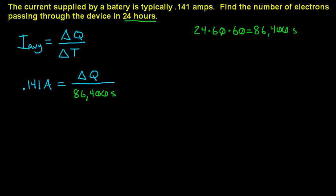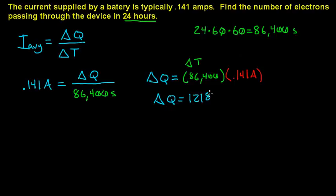To get change in Q, we're going to say delta T, 86,400 seconds, times this 0.141 amps. And when we do that, we get 12,182.4 coulombs.